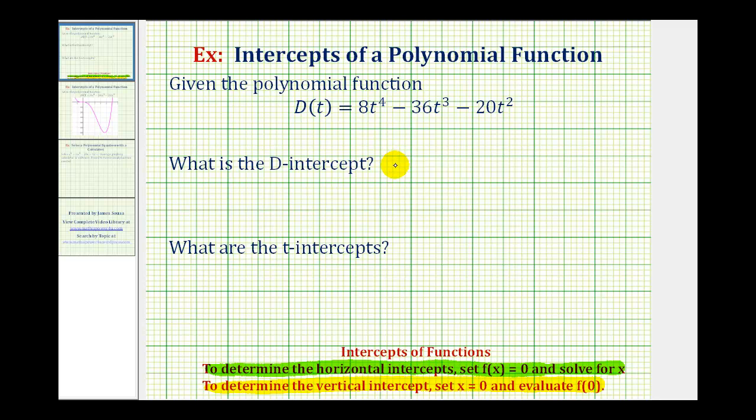To find the d-intercept, we set t equal to zero. So we'd have D(0) = 8(0)⁴ - 36(0)³ - 20(0)².